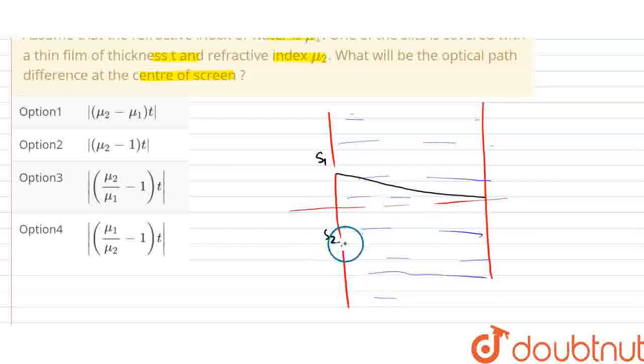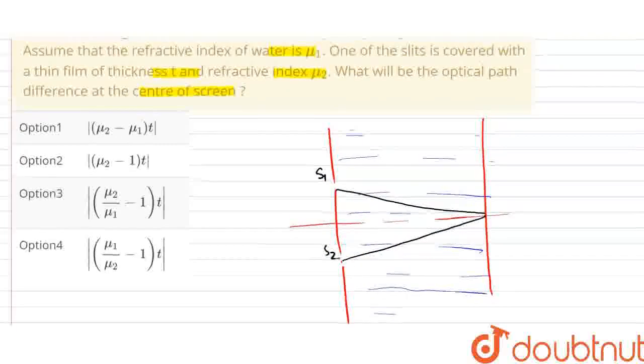The slit will be placed in the center of the screen. Then, the path difference is the same. But what is the difference? Now,